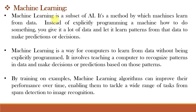Machine Learning is a part of AI. It is like teaching a machine by showing it many examples instead of telling it exactly what to do. With Machine Learning, computers learn from examples instead of strict instructions. They figure out patterns and use them to make decisions or guesses. By practicing with many examples, Machine Learning gets better at its job over time. It can do things like spotting spam emails or recognizing objects in pictures.